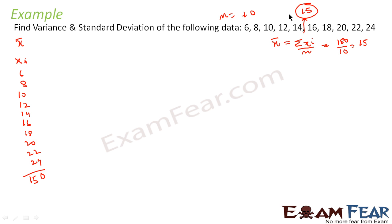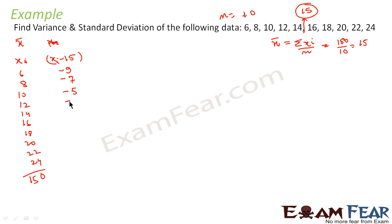Now we find the deviation xi minus 15 for each value: 6 − 15 = −9, 8 − 15 = −7, 10 − 15 = −5, 12 − 15 = −3, 14 − 15 = −1, 16 − 15 = 1, 18 − 15 = 3, 20 − 15 = 5, 22 − 15 = 7, and 24 − 15 = 9.